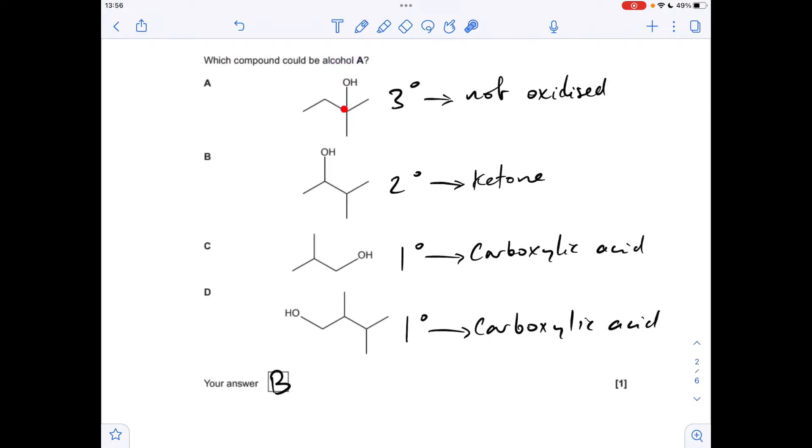Running through the four alcohols: it is tertiary because the OH carbon is bonded to one, two, three carbons directly, but that's not oxidized, it's not that one. It's the secondary alcohol, two carbons directly bonded to the OH carbon, so this will give a ketone, that's the answer. These are both primary alcohols so they would be oxidized under reflux to carboxylic acids.